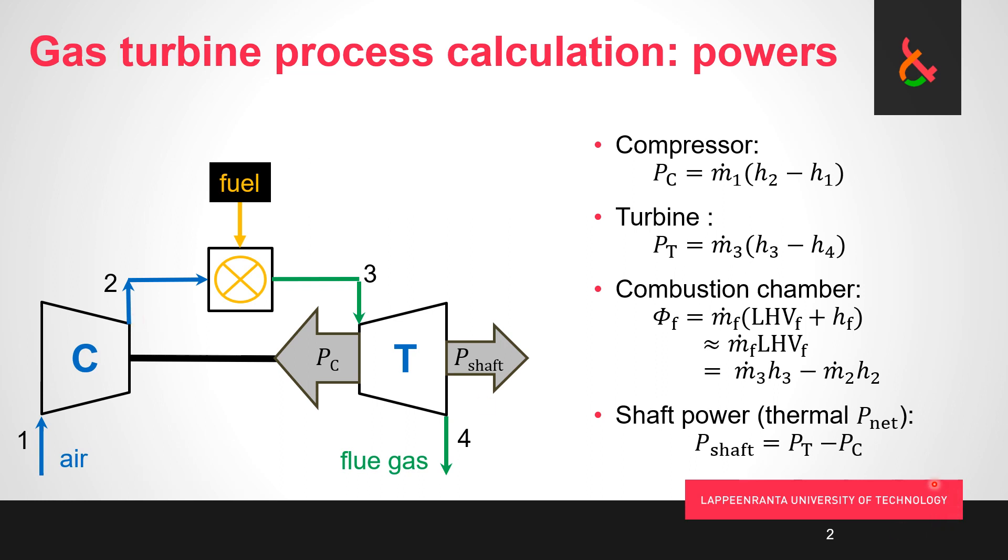Then we have the net thermal power or the shaft power of the gas turbine, and that is going to be the thermal power of the turbine, what the gas leaves to the turbine rotor, minus the consumption of the compressor. So roughly half, rather more than less than half of the turbine power is used to run its own compressor.